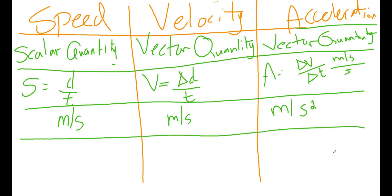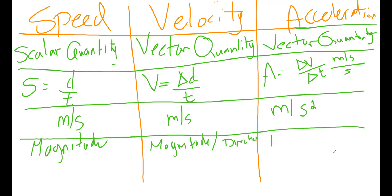Speed only needs magnitude. Velocity needs both magnitude and direction. Acceleration also needs both magnitude and direction. Their units follow from these definitions.